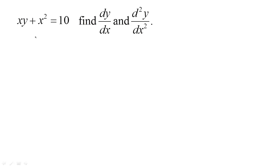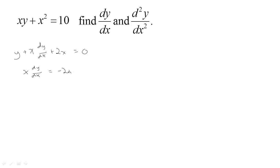To find the first derivative we're going to take the derivative of both sides with respect to x. We have a product of two functions of x, so we take the derivative of the first (which is 1) times the second, plus the first (which is x) times the derivative of the second. Then the derivative of x squared gives 2x, and that equals 0. So x times dy/dx equals negative 2x minus y, giving us dy/dx = (-2x - y) / x.